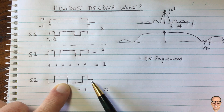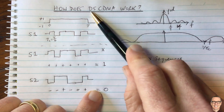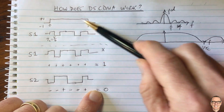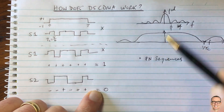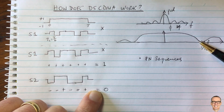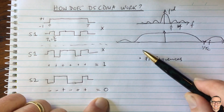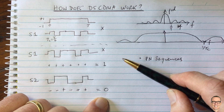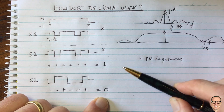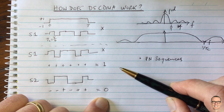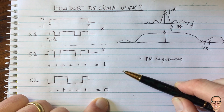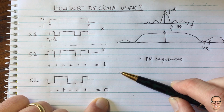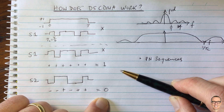I hope this has helped you understand how direct sequence works - directly multiplying a sequence by the symbol, and how that expands the bandwidth and spreads the spectrum. If you found it helpful, give it a thumbs up - it helps others find the video. Check out the webpage in the link below for a full categorised list of all the videos on the channel, and subscribe for more videos.